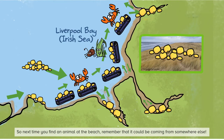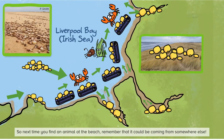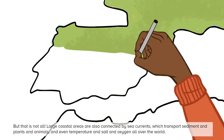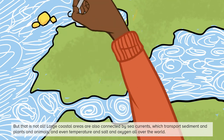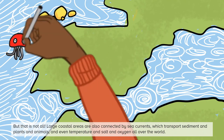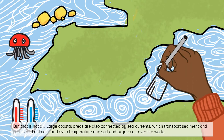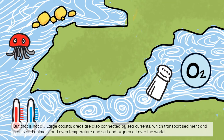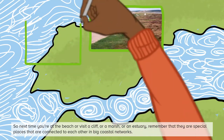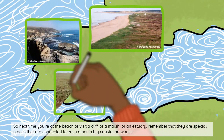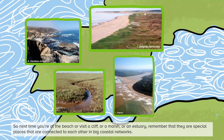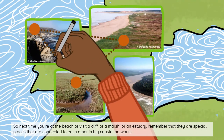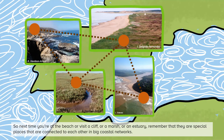So next time you find an animal at the beach, remember that it could be coming from somewhere else. Large coastal areas are also connected by sea currents, which transport sediment and plants and animals and even temperature and salt and oxygen all over the world. So next time you are at the beach or visit a cliff or a marsh or an estuary, remember that they are special places that are connected to each other in big coastal networks.